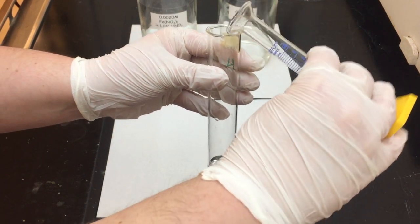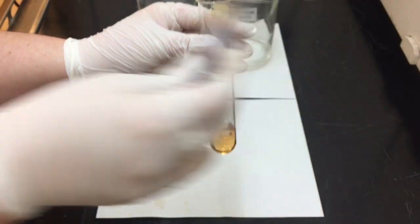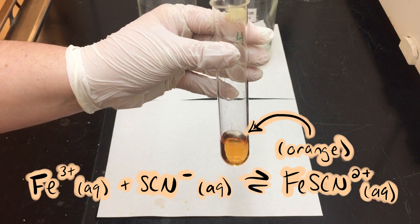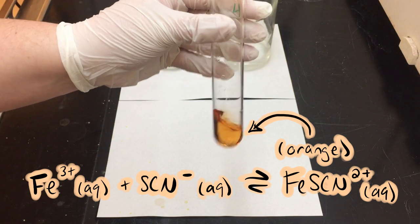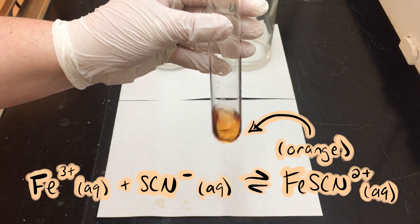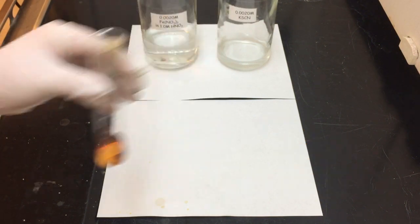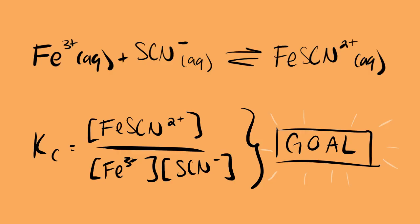In the test tube here we have that iron nitrate. We are mixing it with the thiocyanate and we see that we get this beautiful orange color. The orange color, which is kind of enriching over time, is a sample in solution of the iron thiocyanate with a 2+ charge. This is going to be ultimately what we are measuring the equilibrium constant of.